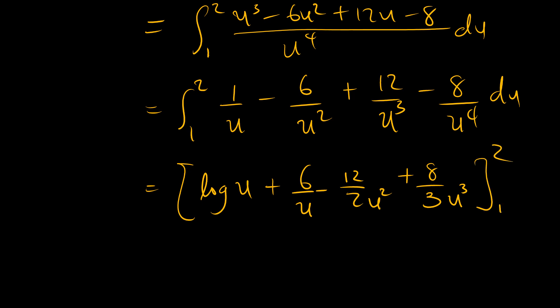So we have at u=2... this is obviously 8, 8 times 3 is 24, minus at u=1: log of 1 is 0, plus 6, minus 6, 12 divided by 2, plus 8 over 3. Let's cancel.